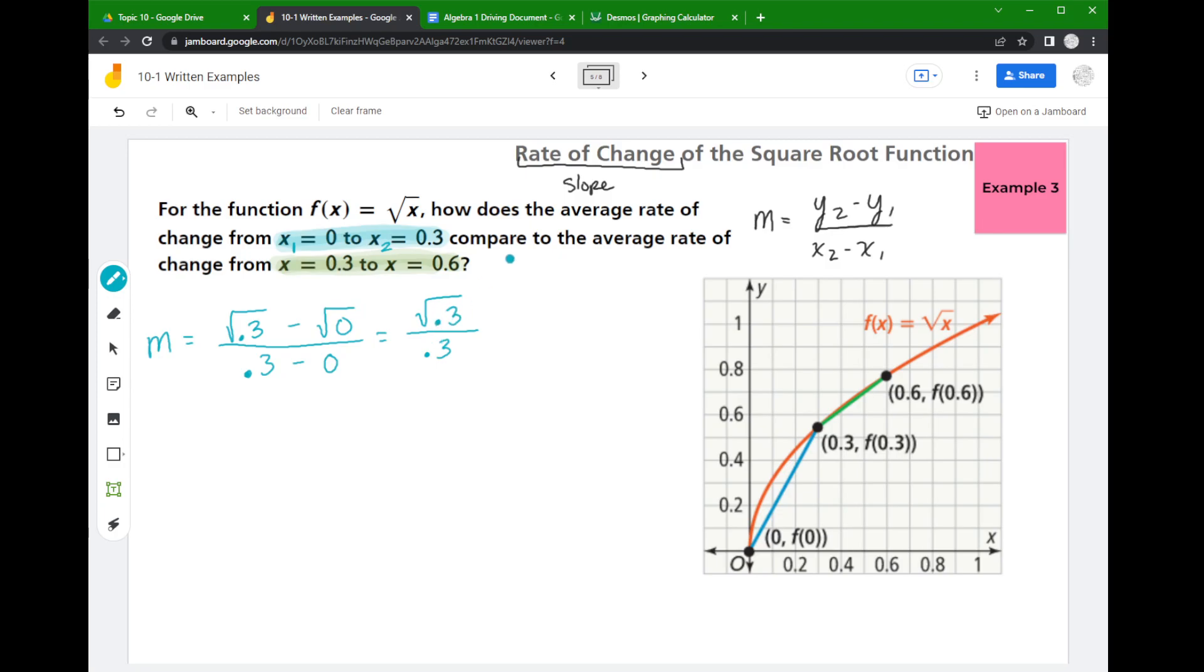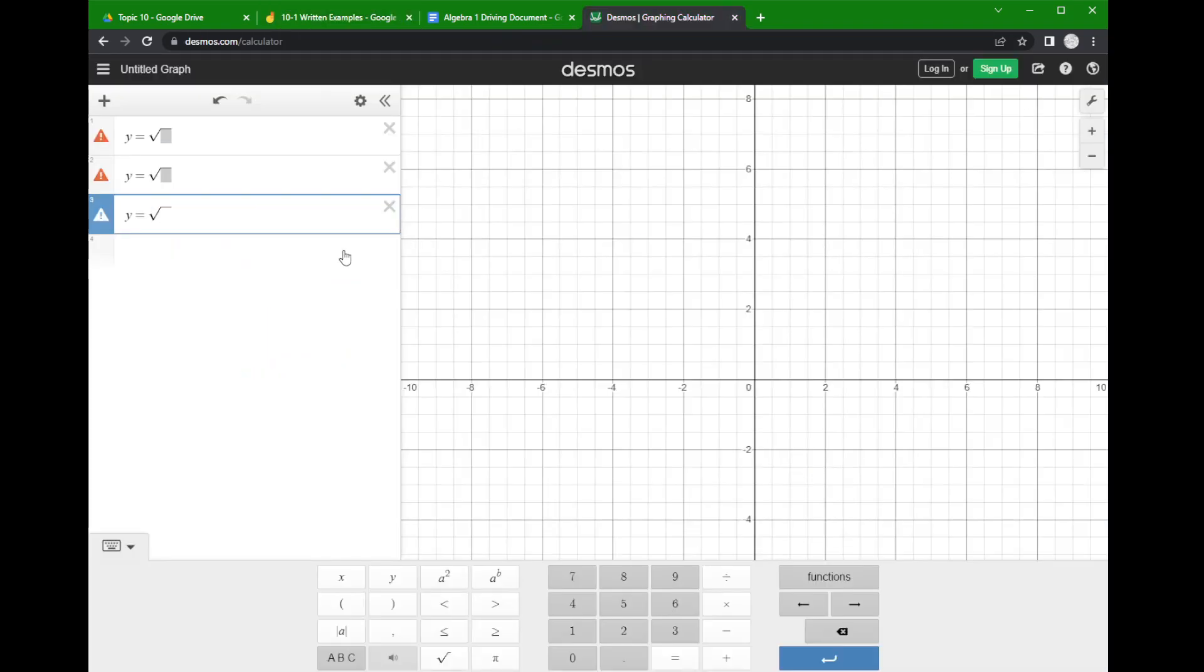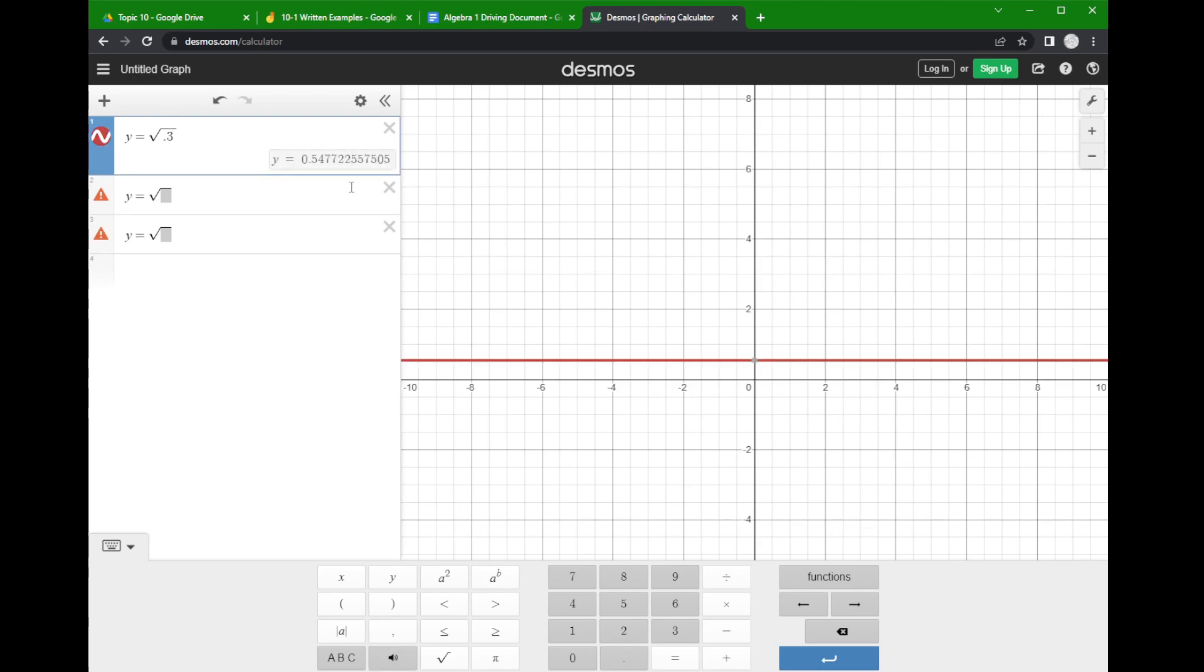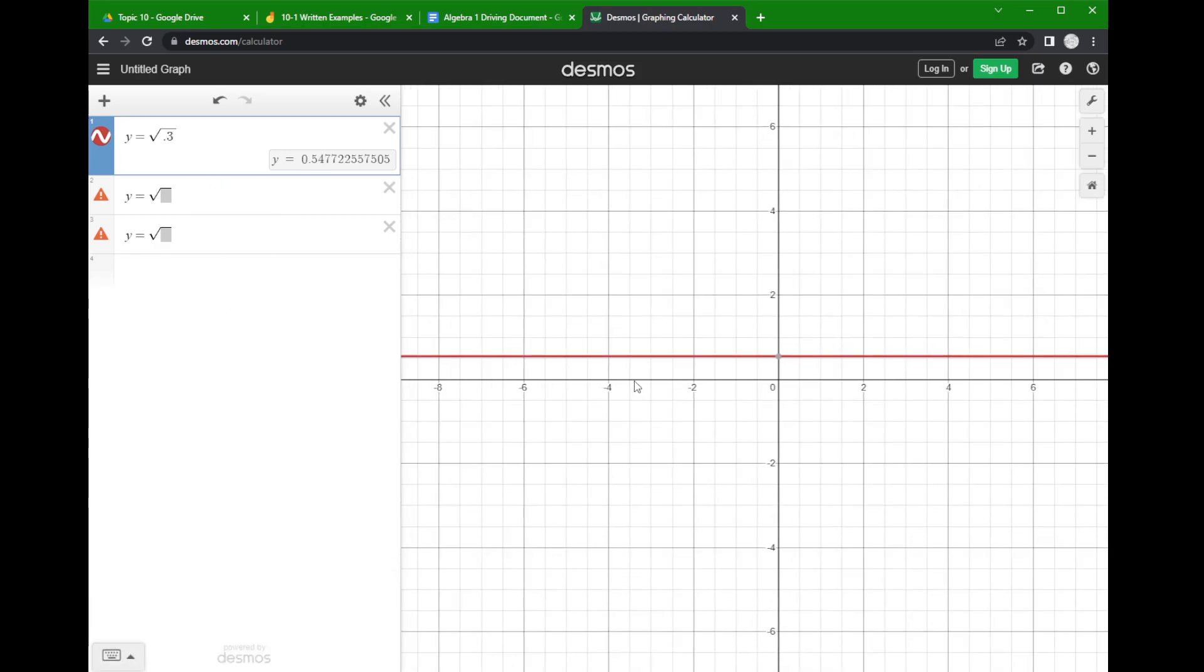Now up top, the square root of 0 is just 0, and subtracting 0 doesn't do anything, so this entire term just goes away—we don't need it. So when I go over to my calculator, I'm actually going to use Desmos for this. I'm only going to do the square root of 0.3 divided by 0.3.